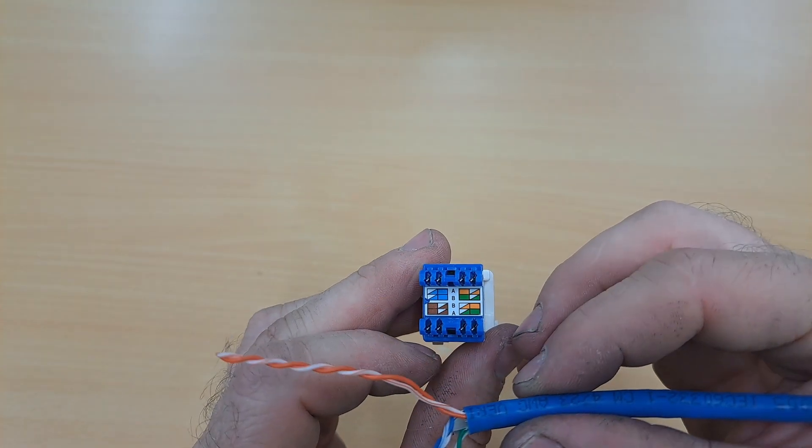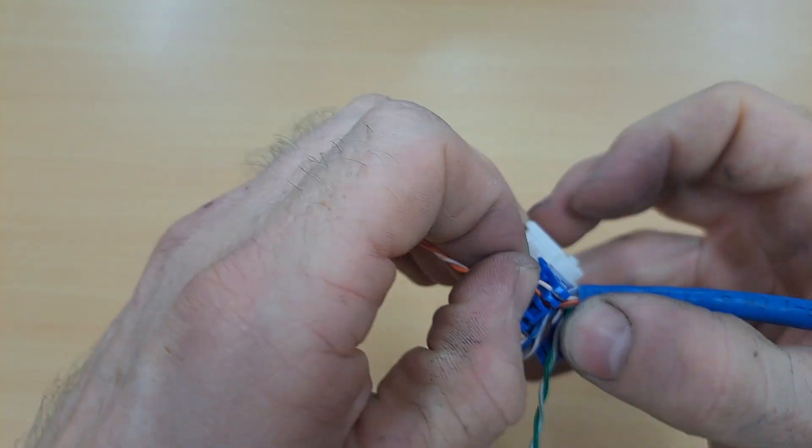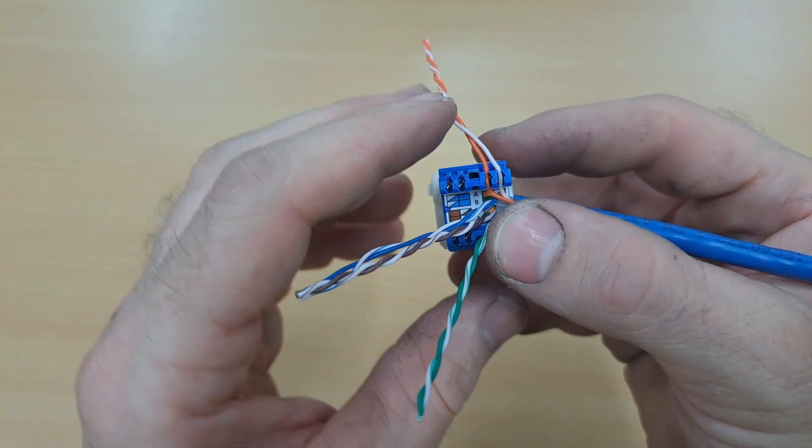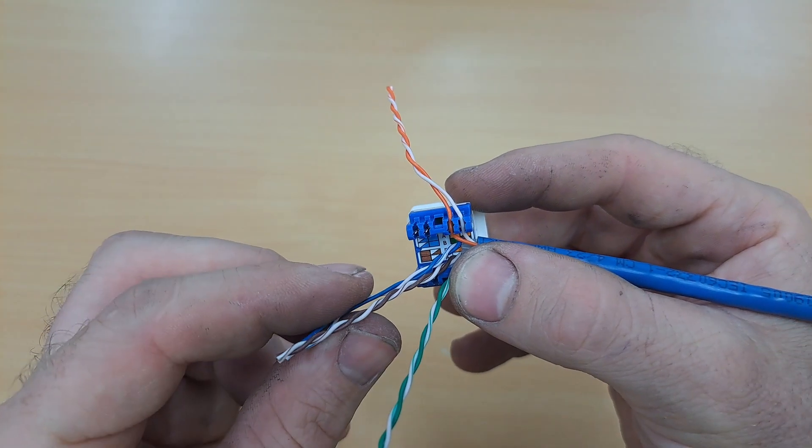I'm going to start with the cables closest to this side and work my way to the left. I'm going to push them in there by hand first and then punch them down once they're half seated.